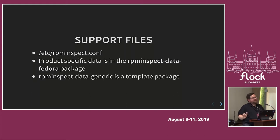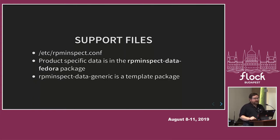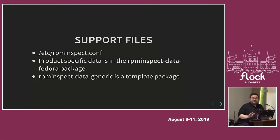Support files: one problem RPM Diff had was that it hard-coded basically all of the knowledge it was checking for — in a mix of header files, string constants, all over the place. So I started splitting that out into a separate data package and a configuration file for finer-grained control. RPM Inspect uses rpminspect.conf, and product-specific data is in the RPM Inspect data package. The program provides a package called 'rpm-inspect-data-generic' as a template, and then there's a separate one called 'rpm-inspect-data-fedora' — that's the one you want if running on your system. It's the same idea as fedora-release vs. redhat-release vs. generic-release.